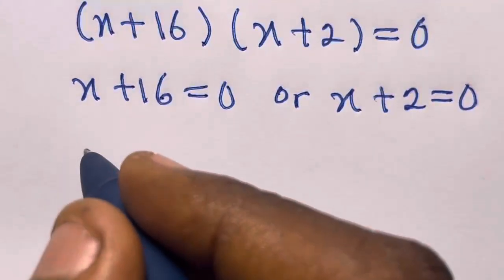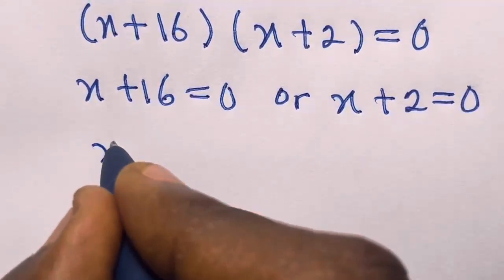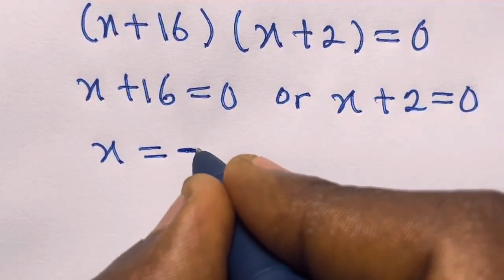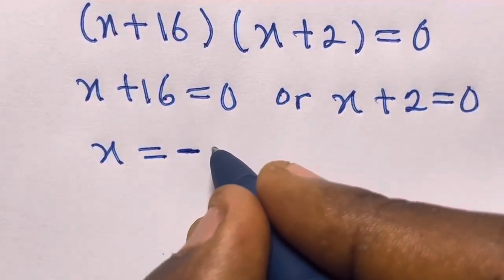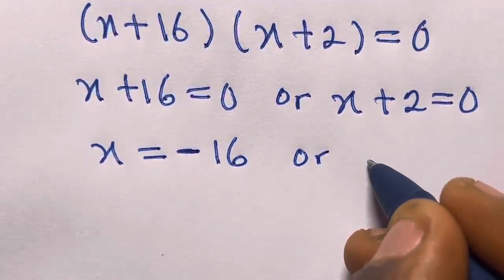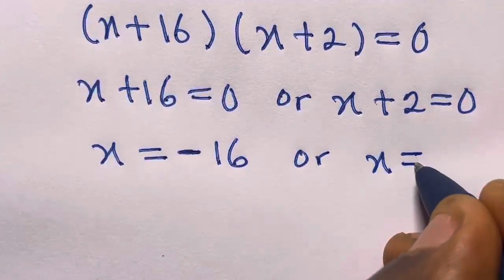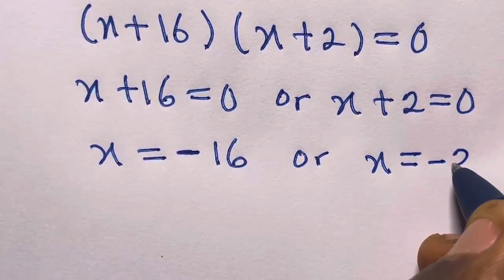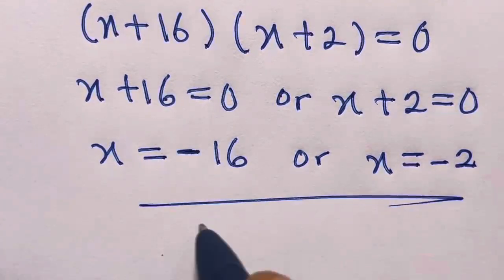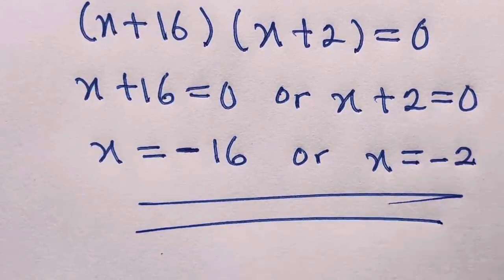So we have x plus 16 equals 0 or x plus 2 equals 0, which means x equals minus 16 or x equals minus 2. So this is the answer.